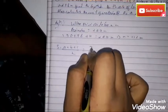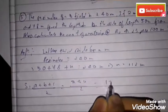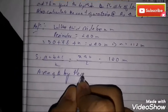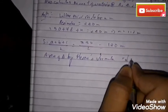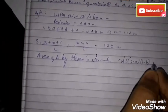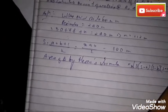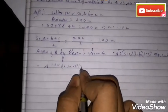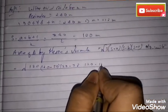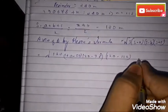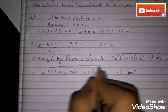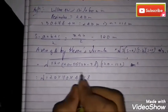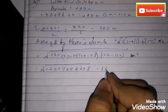Using Heron's formula: s = 240 / 2 = 120 meters. Area = √(s × (s−a) × (s−b) × (s−c)) = √(120 × (120−50) × (120−78) × (120−112)) = √(120 × 70 × 42 × 8) = 1680 square meters.